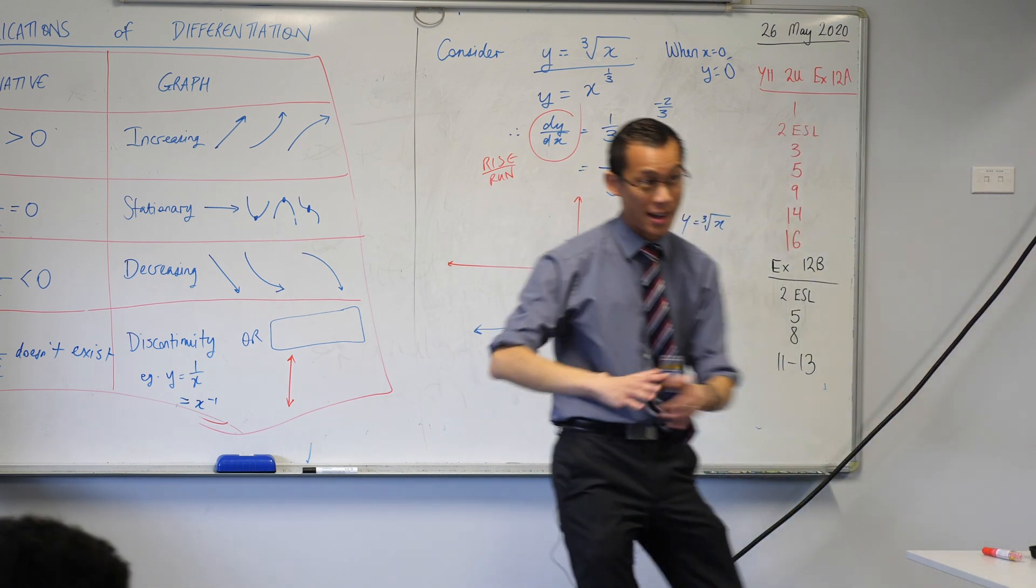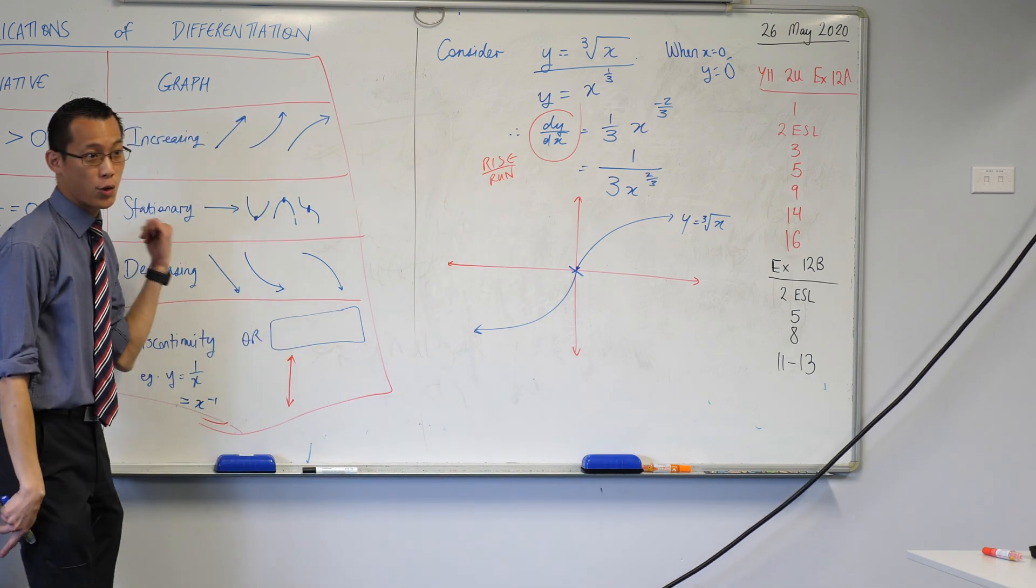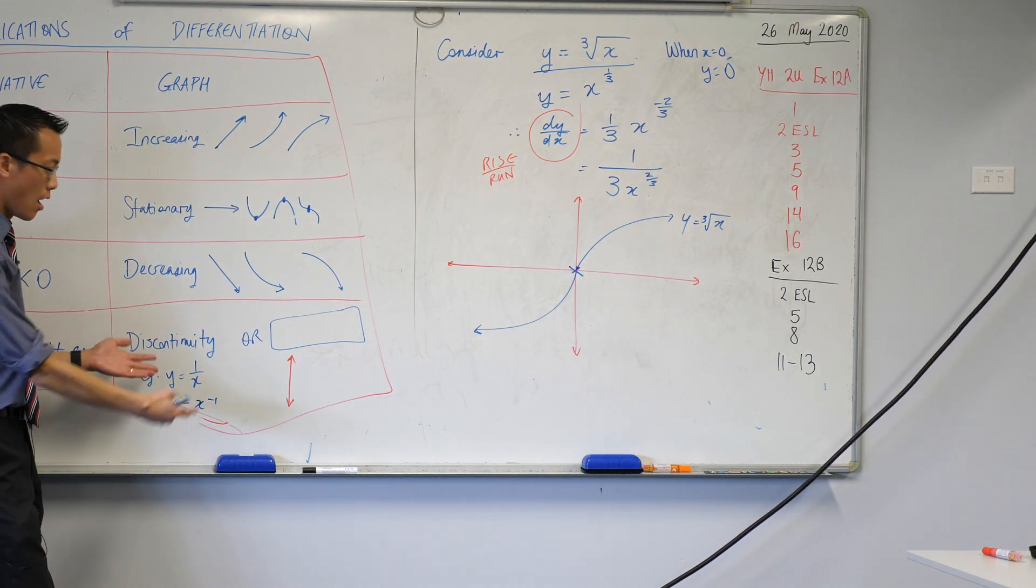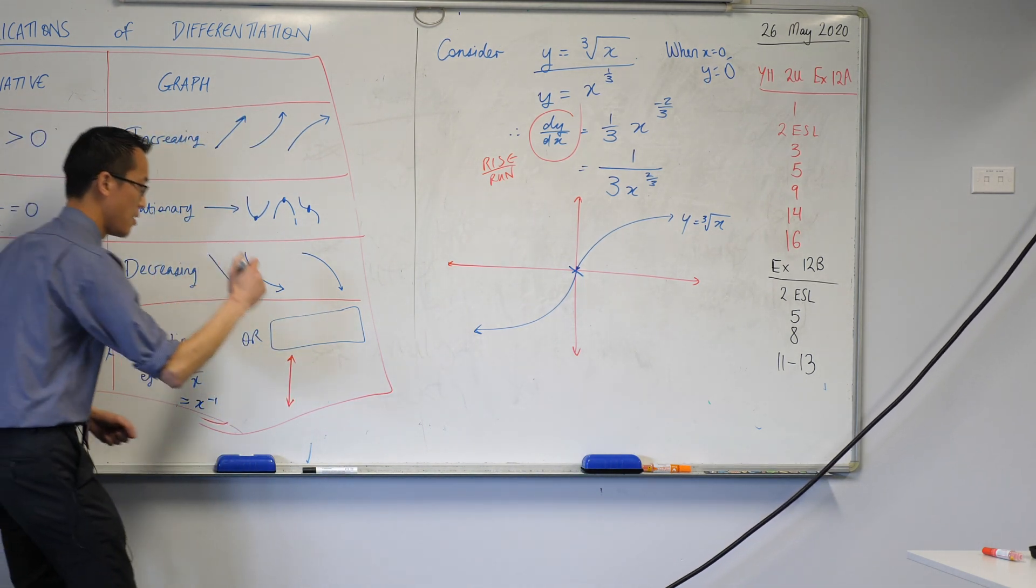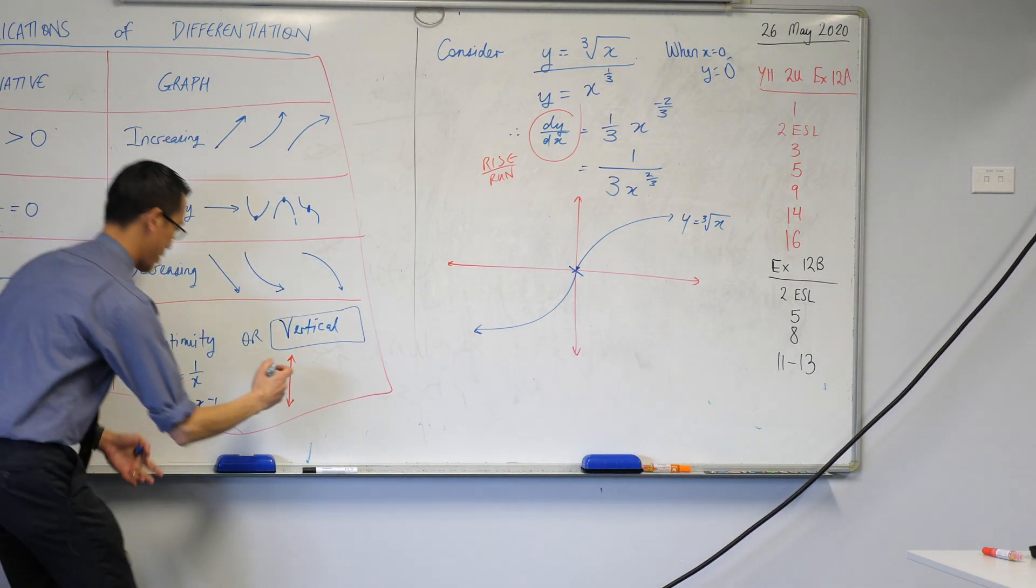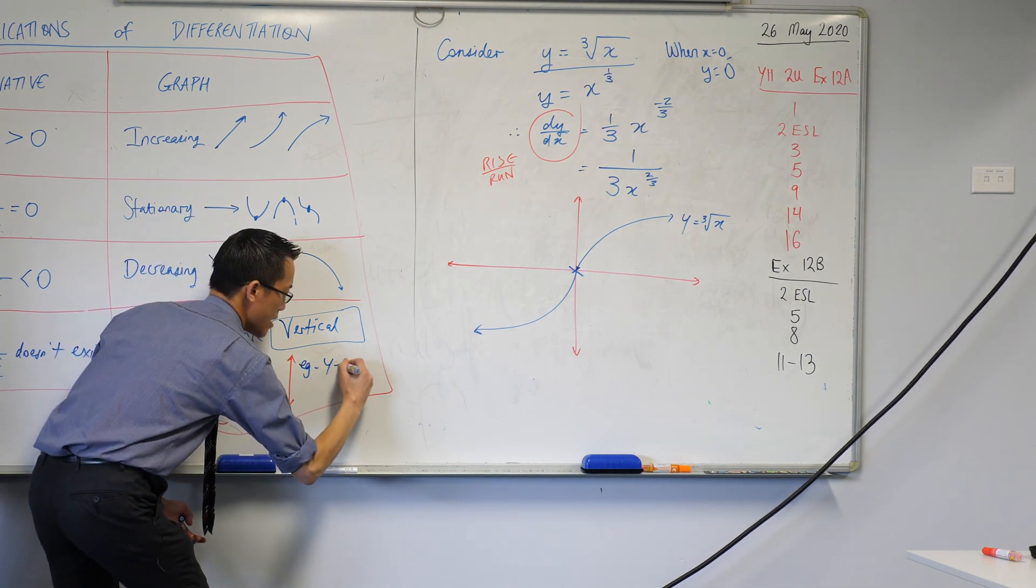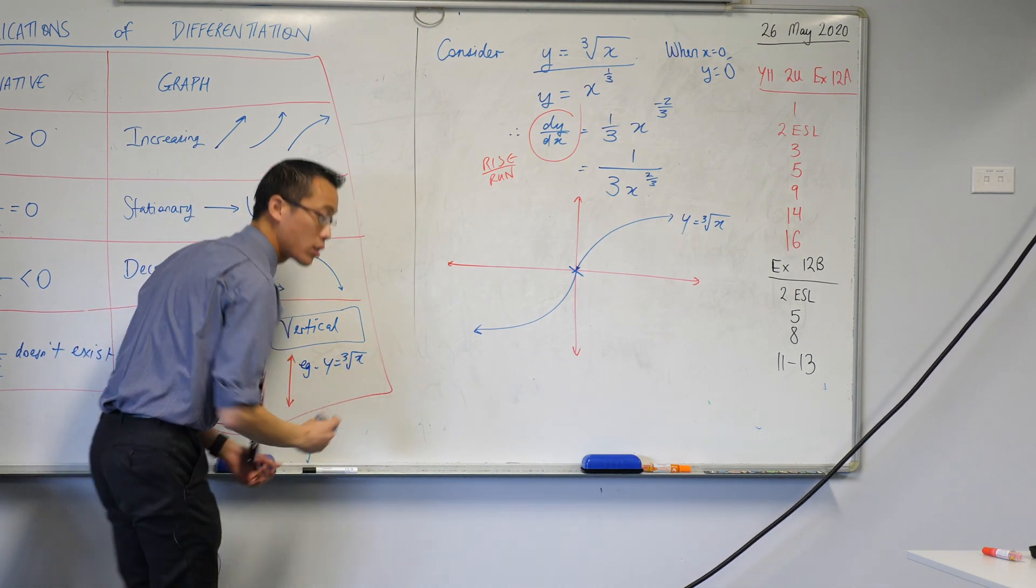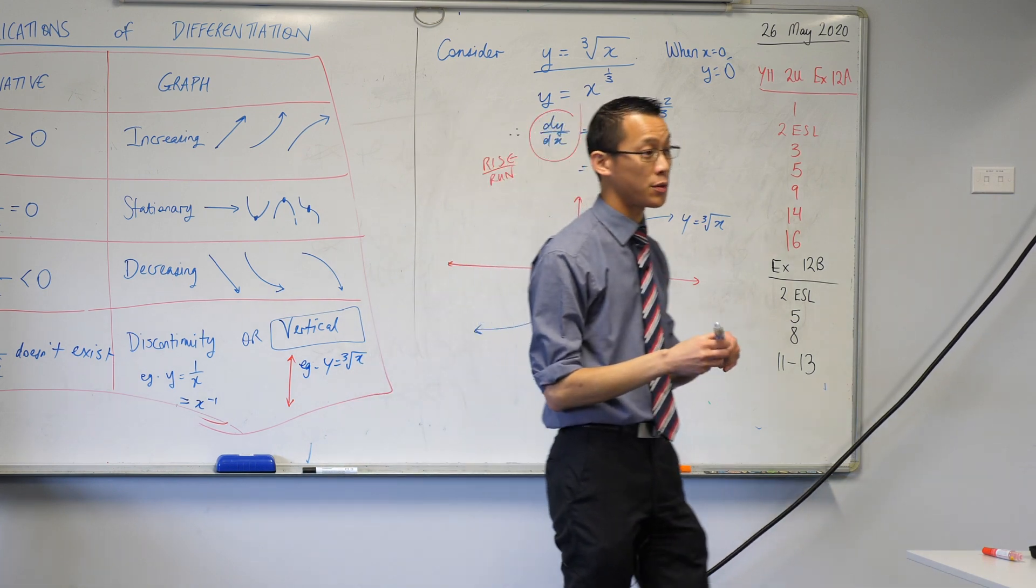So, coming back to our table, we can complete it now. If you have, or you try and find the derivative and it doesn't exist, either you've got discontinuity or your graph is vertical. And our example for this is y equals the cube root of x. There are, of course, others that do this, but this is just the simplest example that I can draw.